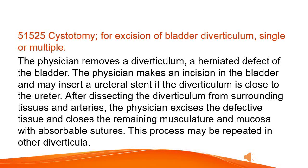For excision of bladder diverticulum, single or multiple: the physician removes a diverticulum, a herniated defect of the bladder. The physician makes an incision in the bladder and may insert a ureteral stent if the diverticulum is close to the ureter. After dissecting the diverticulum from surrounding tissues and arteries, the physician excises the defective tissue and closes the remaining musculature and mucosa with absorbable sutures. This process may be repeated in other diverticula.